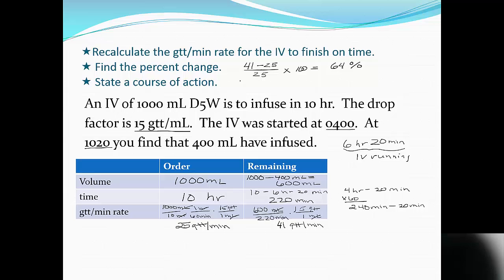Our course of action: 64% is greater than the 25% change that we're allowed to make independently, so we're going to consult with our doctor and see what he or she wants us to do. And so we've solved this problem using the chart as one of our tools.